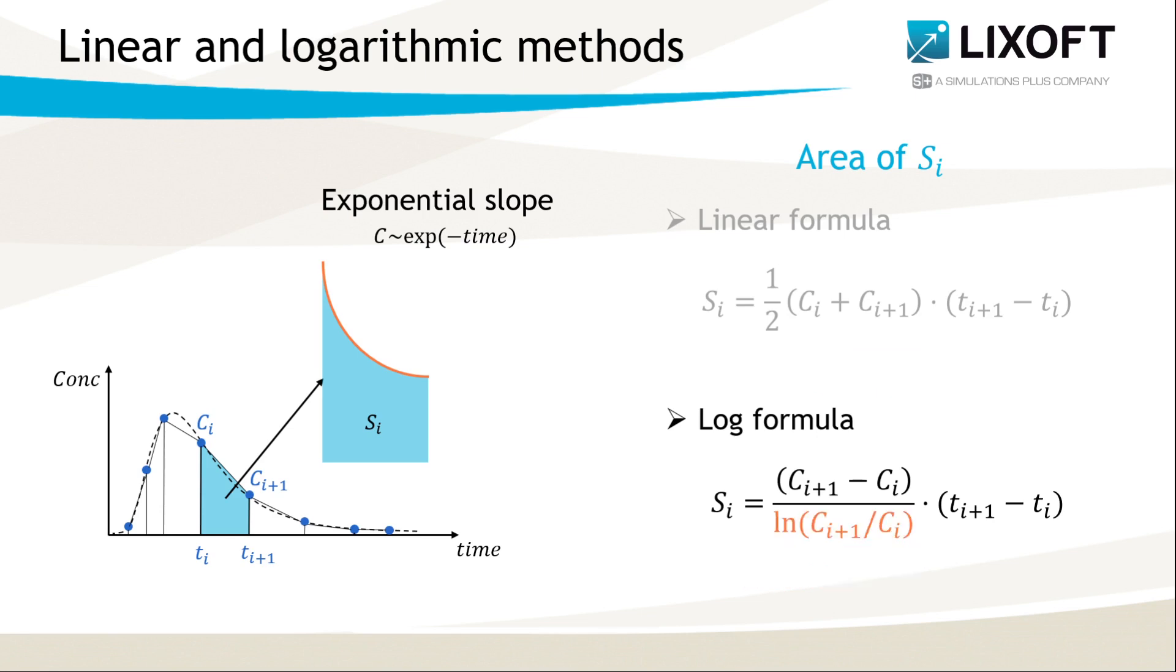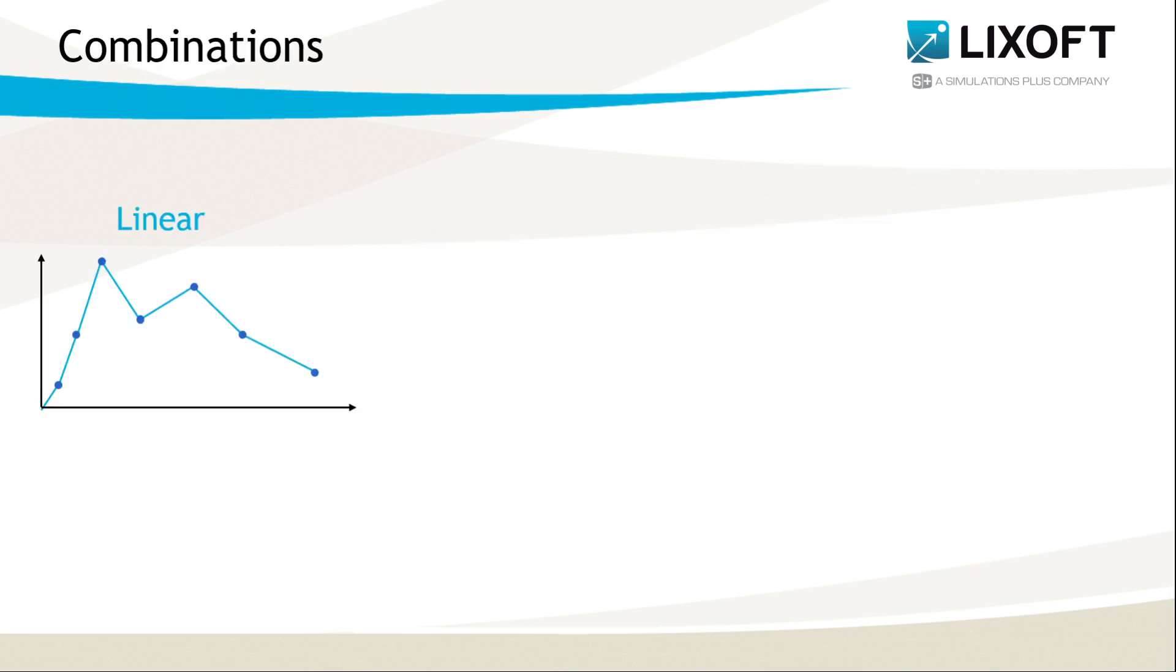However, due to the presence of logarithms, this formula is mathematically undefined if observation values are less than or equal to zero, or if adjacent observation values are equal. And in these cases, the program will use the linear rule. So AUC can be computed using a linear formula everywhere or using combinations of these two formulas, linear and logarithmic.